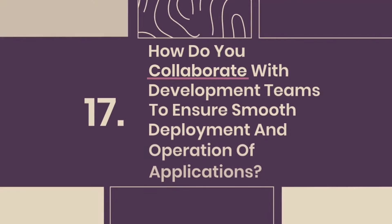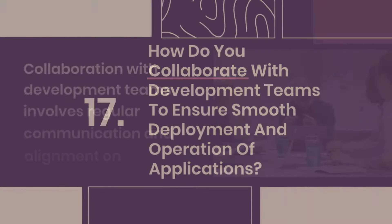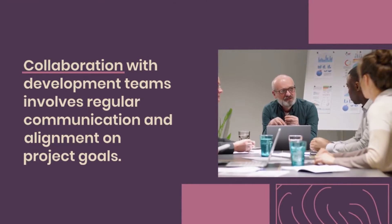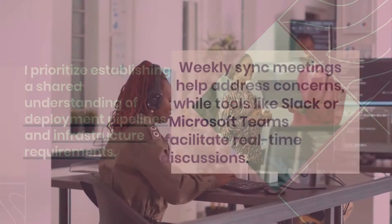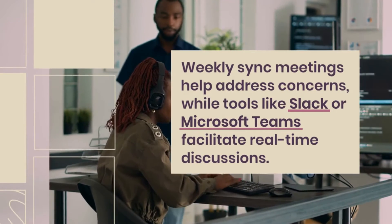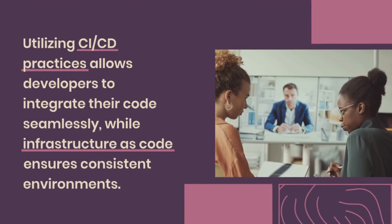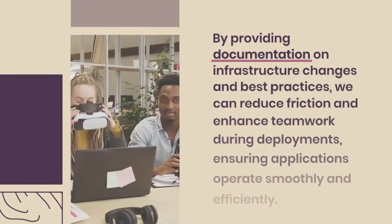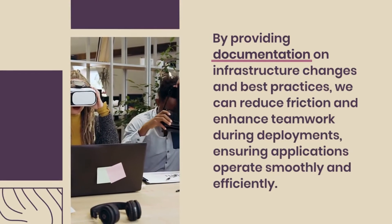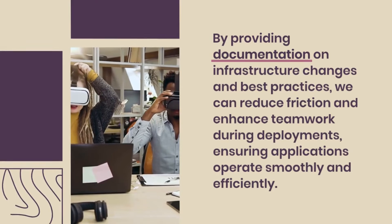Question 17: How do you collaborate with development teams to ensure smooth deployment and operation of applications? Collaboration with development teams involves regular communication and alignment on project goals. I prioritize establishing a shared understanding of deployment pipelines and infrastructure requirements. Weekly sync meetings help address concerns, while tools like Slack or Microsoft Teams facilitate real-time discussions. Utilizing CI/CD practices allows developers to integrate their code seamlessly, while Infrastructure as Code ensures consistent environments. By providing documentation on infrastructure changes and best practices, we can reduce friction and enhance teamwork during deployments, ensuring applications operate smoothly and efficiently.